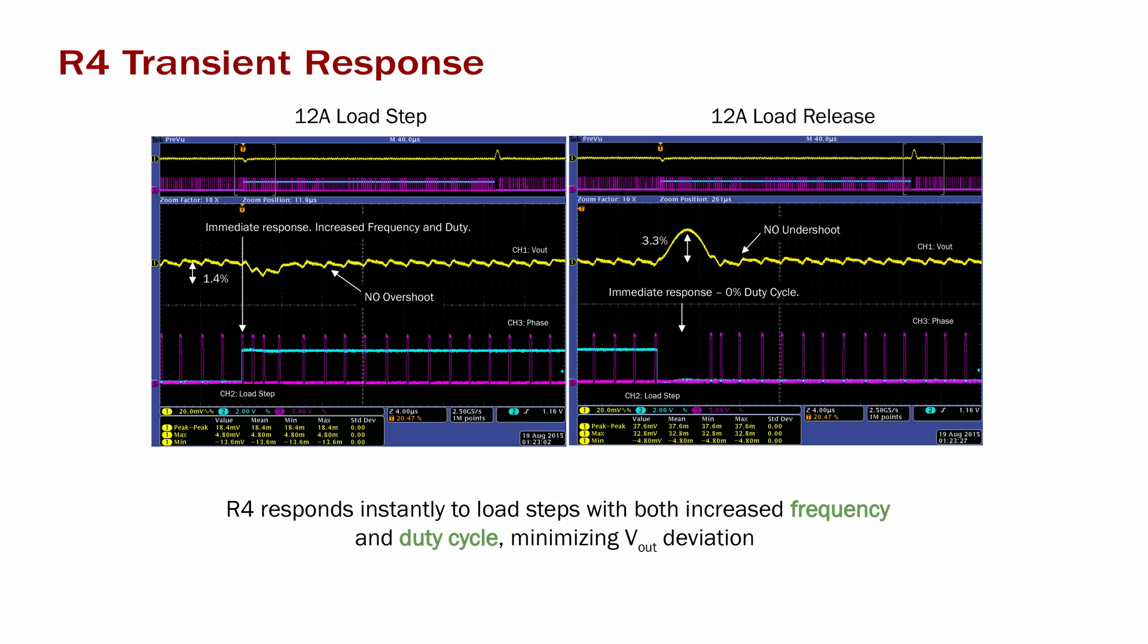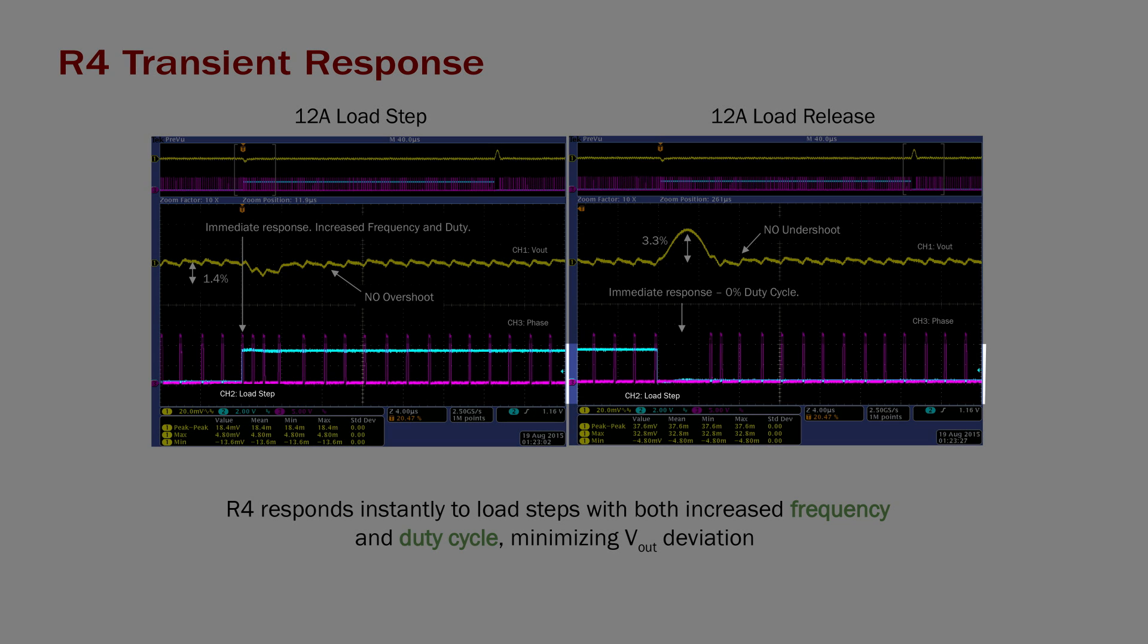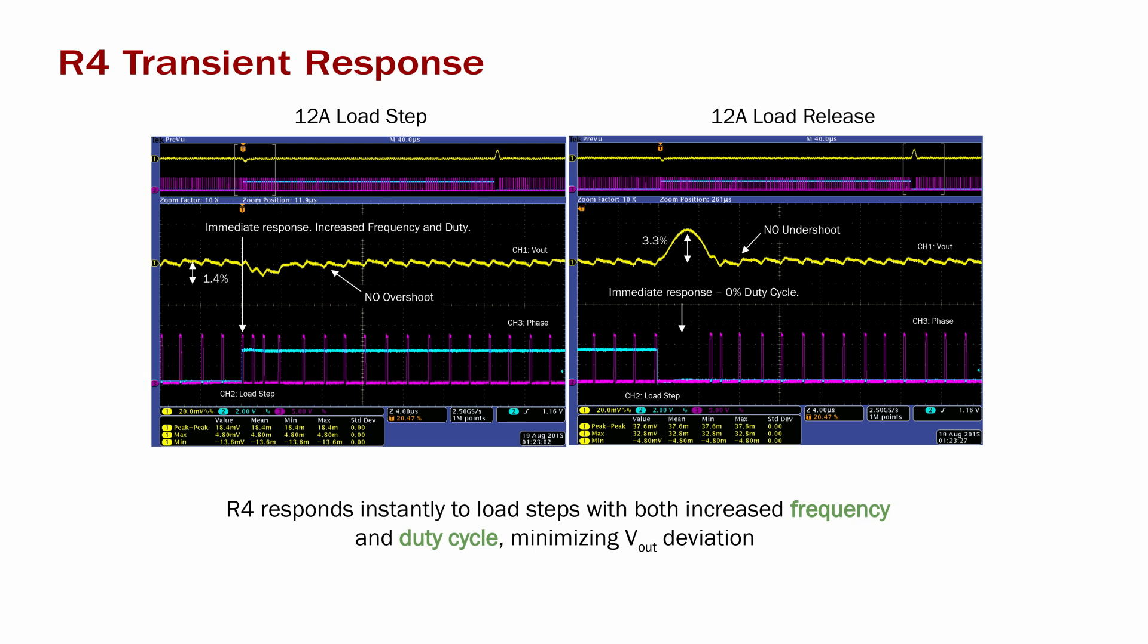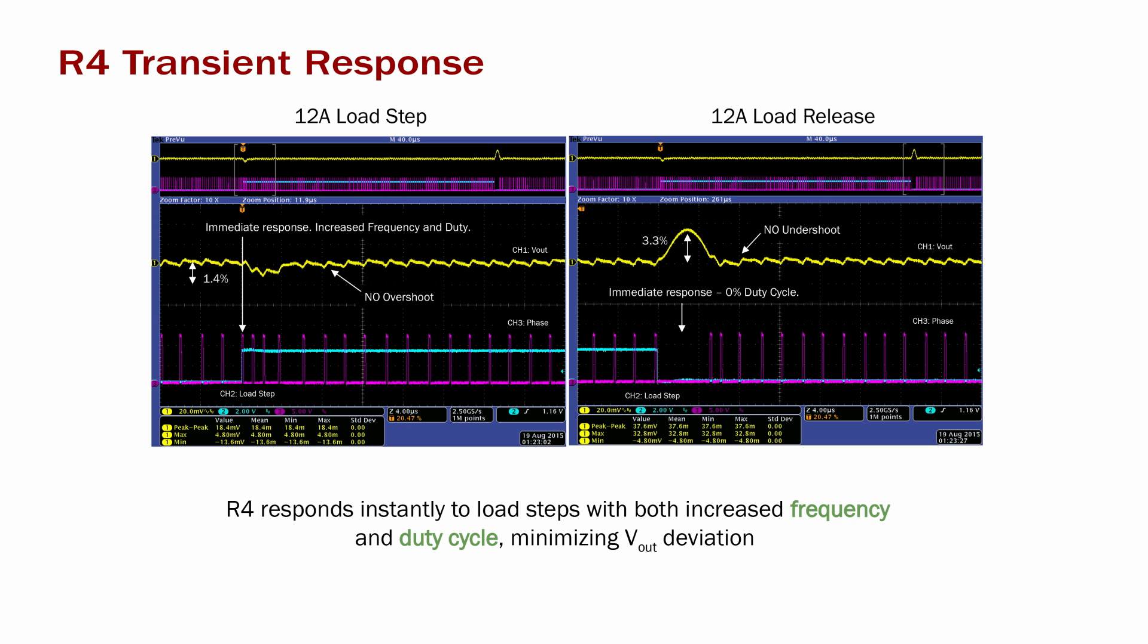This slide showcases the R4 transient response to the same load steps as the previous cases. Channel 1 is the output voltage, channel 3 is the switch node, and channel 2 is the load step. Because R4 offers both variable frequency and variable duty cycle, the deviation in the output voltage is reduced to less than 1.4%. The load release is approximately the same with constant on-time, and this is more a limitation of a buck regulator architecture.